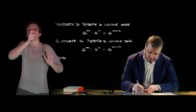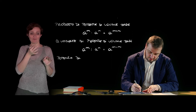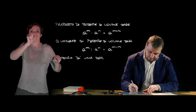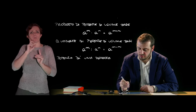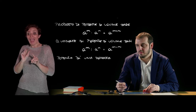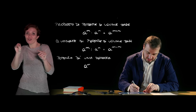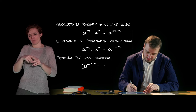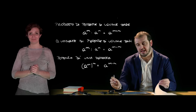La potenza di potenza, ossia la potenza di una ulteriore potenza, come risultato è una potenza che ha per base la stessa base e per esponente il prodotto degli esponenti, per cui se abbiamo A alla m, A alla n, questo sarà pari ad A alla m per n.